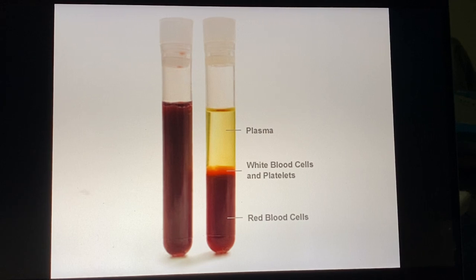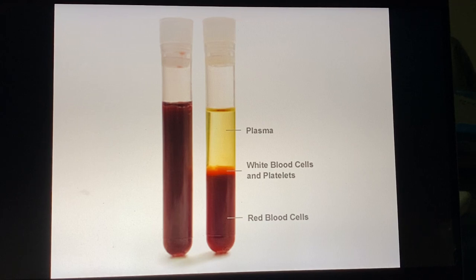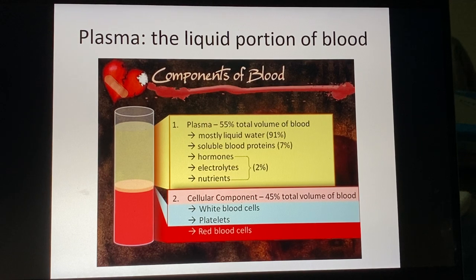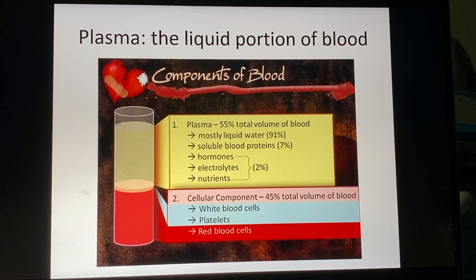If you let blood drawn into a tube sit on a countertop, you would see the red blood cells settle to the bottom, a buffy layer in the middle containing white blood cells and platelets, and then plasma — a straw or yellowish colored liquid — on top. Plasma makes up a little over half of your blood volume, and pretty much anything that's not a formed element goes into plasma: vitamins, hormones, electrolytes like calcium, potassium, and chloride, water, soluble blood proteins, antibodies, and enzymes.